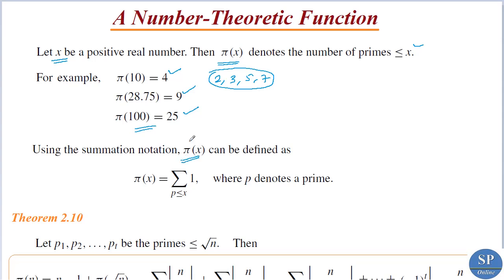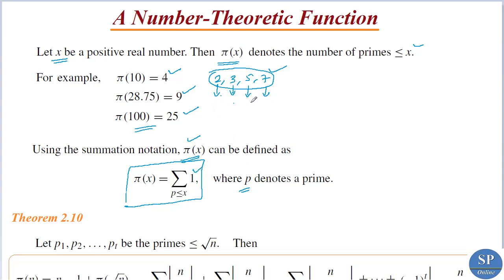Using summation notation, we can define π(x) as: π(x) = Σ_{p ≤ x} 1, where p denotes a prime. That is, π(x) is the sum of 1 over all primes less than or equal to x. For example, if x = 10, the primes less than or equal to 10 are 2, 3, 5, 7, and adding 1 for each gives 1+1+1+1 = 4, so π(10) = 4.